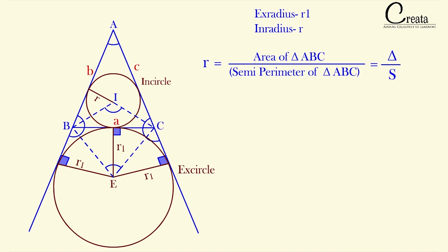With the same philosophy, there is a formula for x-radius, that is r1. The formula is: r1 is equal to the area of the triangle upon semi-perimeter minus a. This is the formula of x-radius.